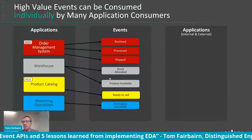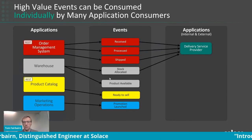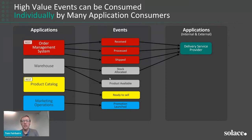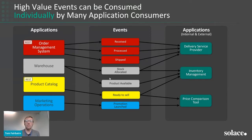On the consuming side, a delivery service provider wants to know when an order is placed, whether stock is likely available, and when a shipment is created. An inventory management application listens to stock availabilities and new product introductions. Externally, a price comparison website might even pay for data about new products or promotion launches. This illustrates the monetization potential of event-driven APIs.